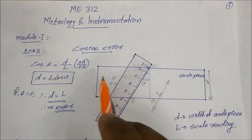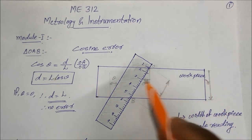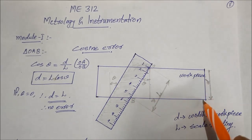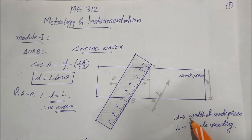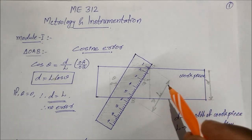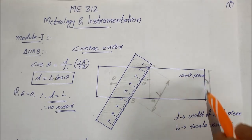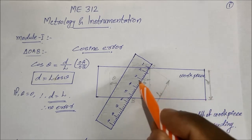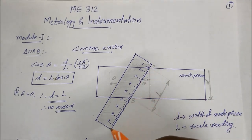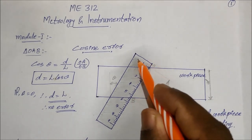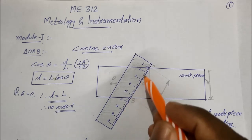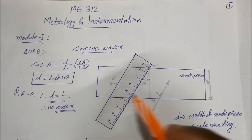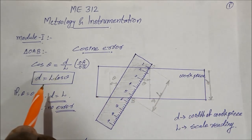For example, this is a workpiece. The first module is about the length measurement. If measurements are created at some angle theta, errors are created — this is called cosine error.